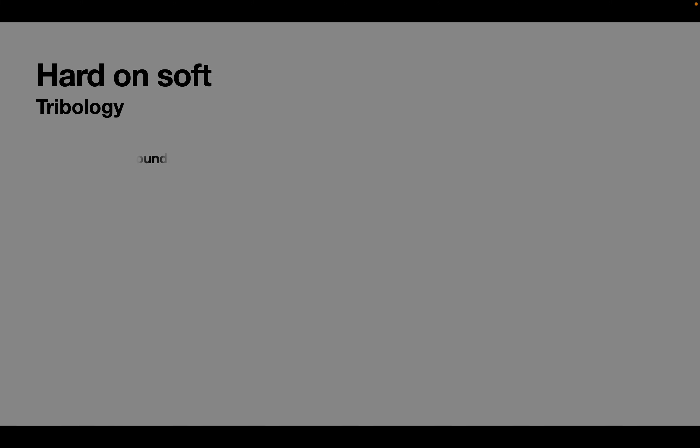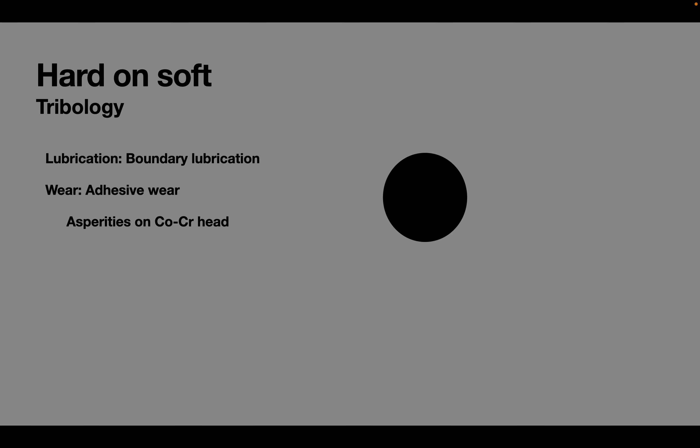Let's look at the tribology of the hard on soft bearing surfaces. Lubrication in hard on soft is boundary lubrication, and wear is mostly due to adhesive wear. The coefficient of friction of metal on polyethylene is the highest. The surface roughness of the cobalt-chromium head is due to its asperities. RA, the arithmetic average of the surface heights of these asperities, is 0.02 microns. These asperities flow into the polyethylene and cause wear.